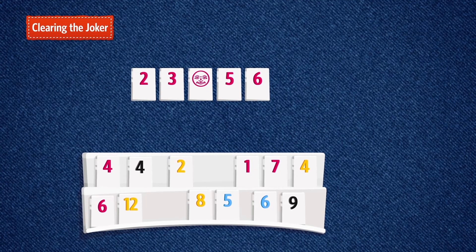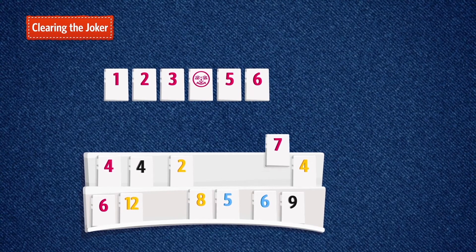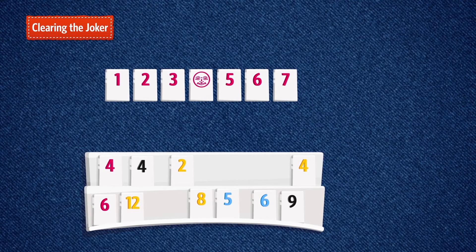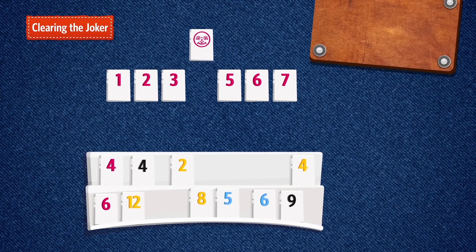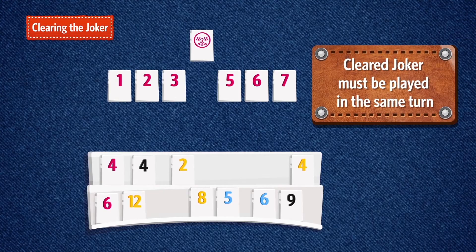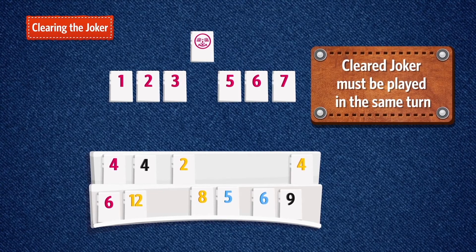Clearing the joker. You can clear the joker with tiles from your rack or by manipulating the table. The joker can once again be used for any value or color, but must be played in the same turn.